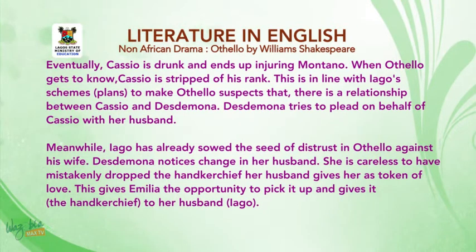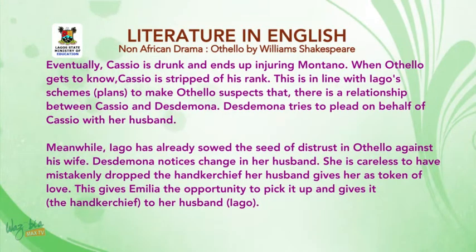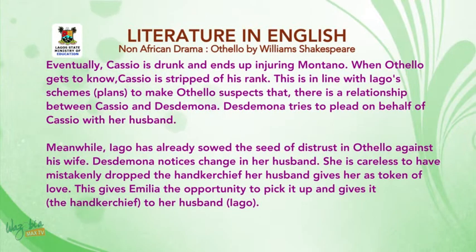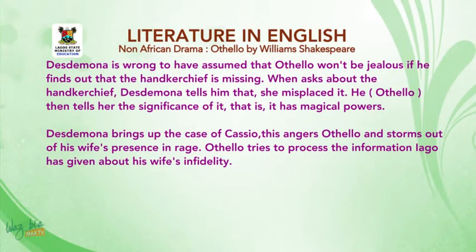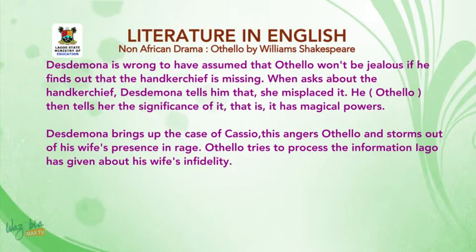Desdemona tries to plead on behalf of Cassio with her husband. Meanwhile, Iago has already sowed the seed of distrust in Othello against his wife. Desdemona notices a change in her husband. She carelessly drops the handkerchief her husband gave her as a token of love. This gives Emilia the opportunity to pick it up and give it to her husband, Iago. When Othello asks about the handkerchief, Desdemona tells him she has misplaced it. Othello then tells her the significance of it — that it has magical powers.